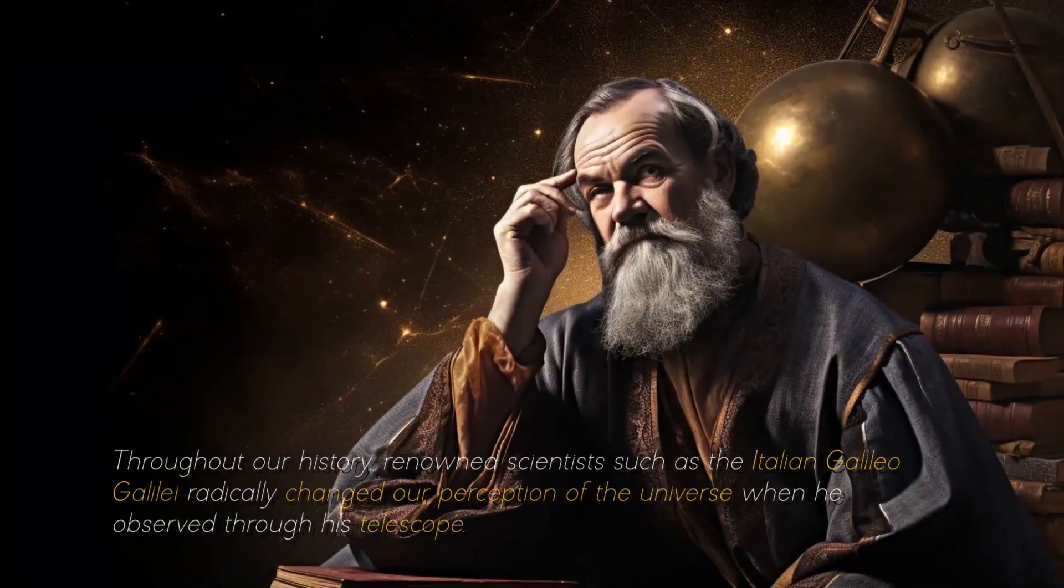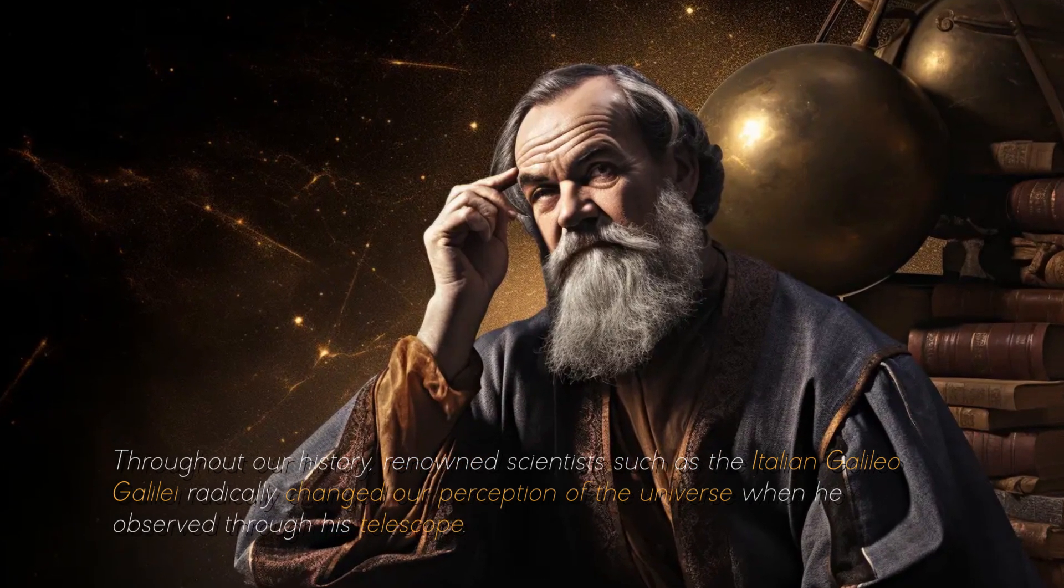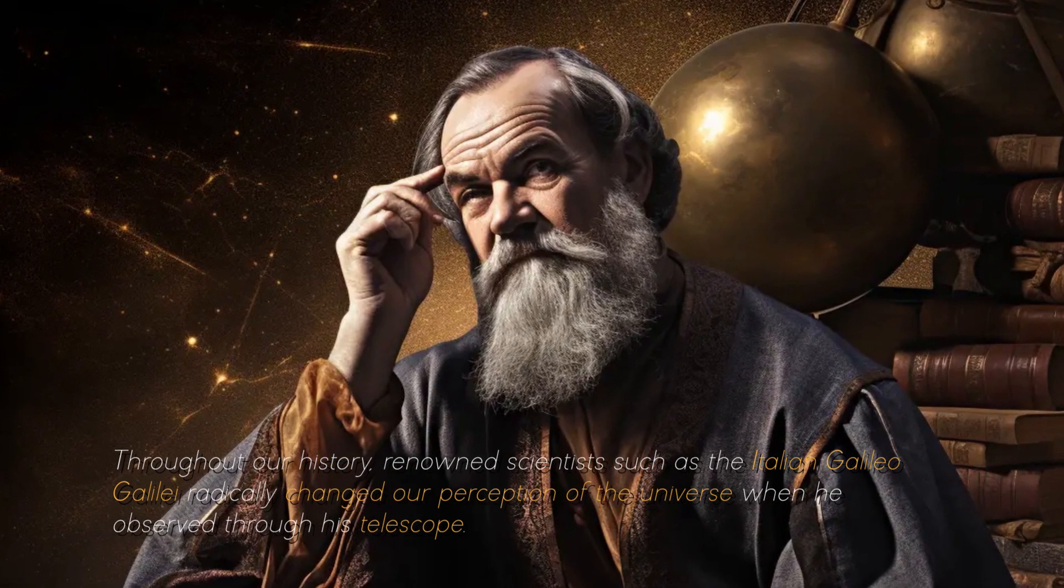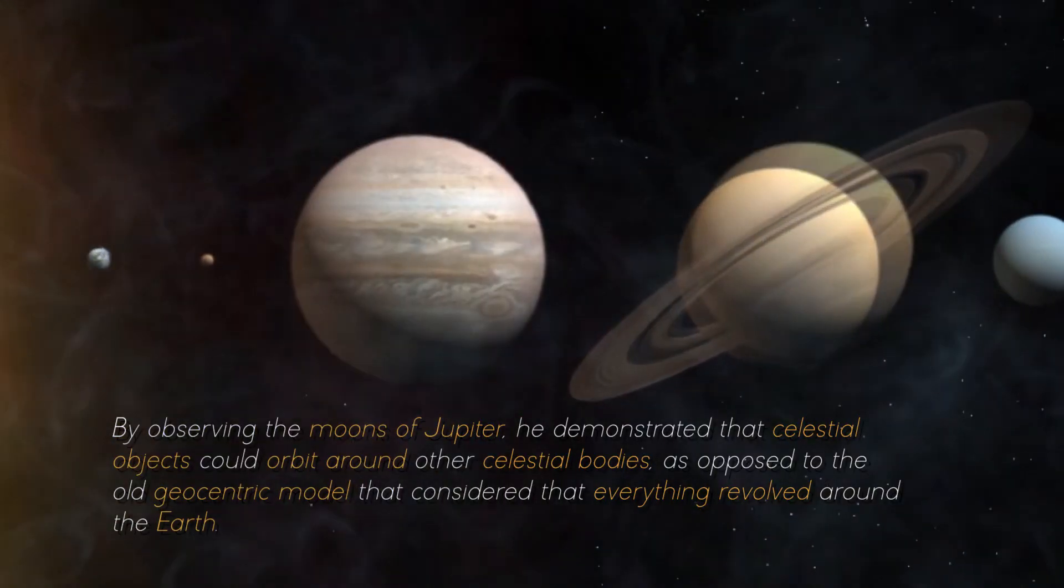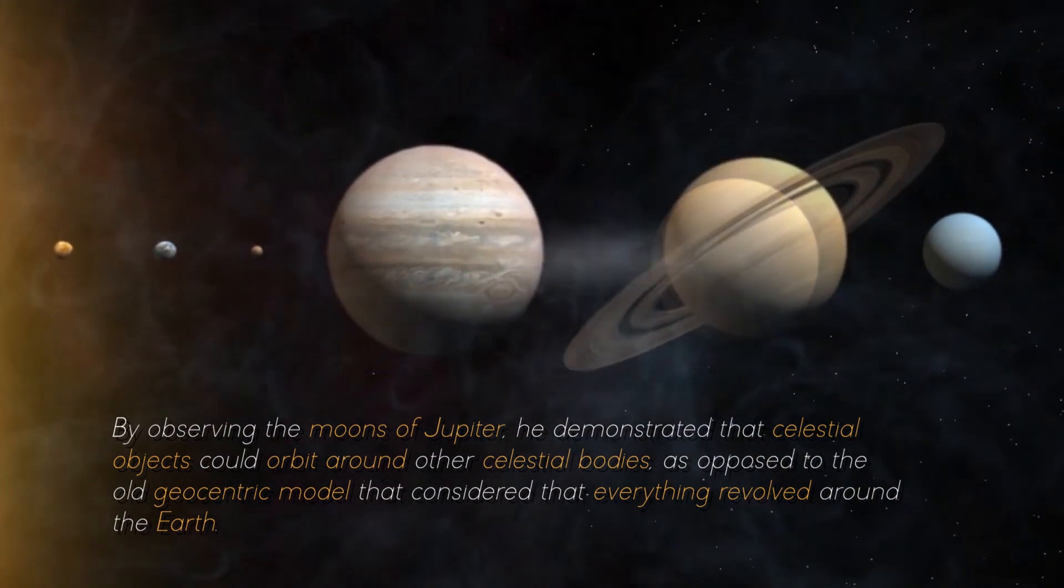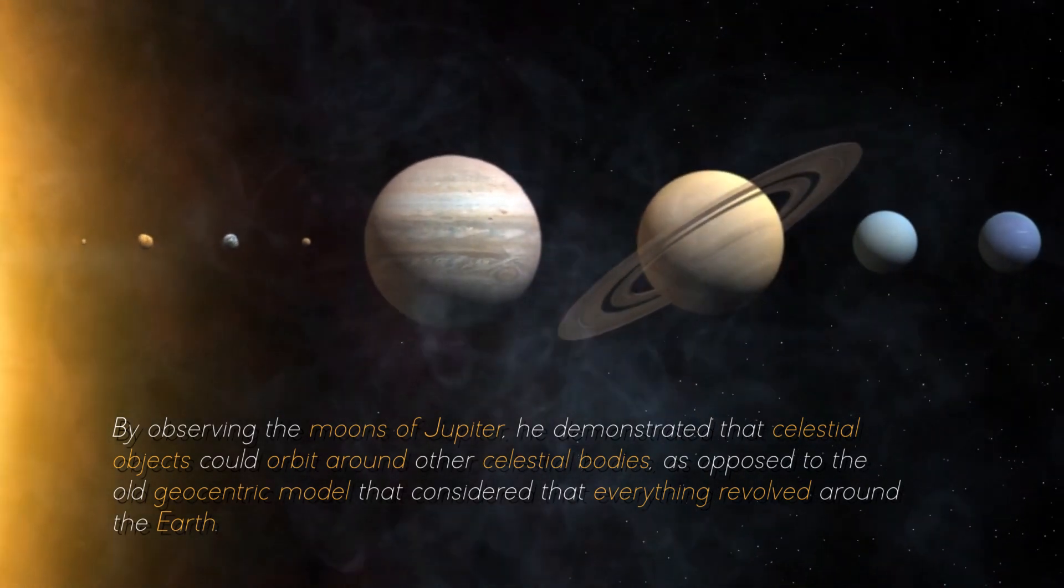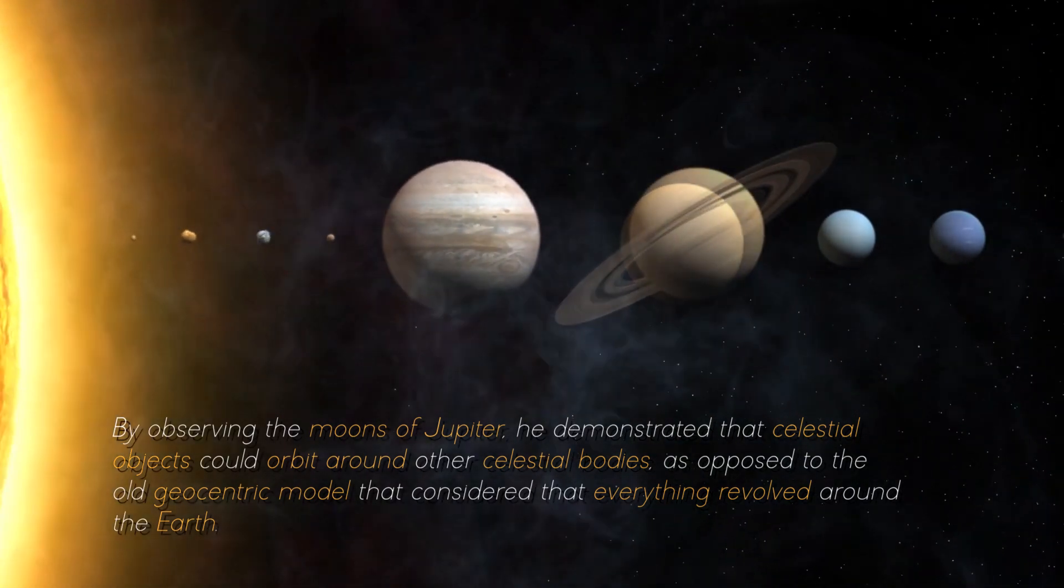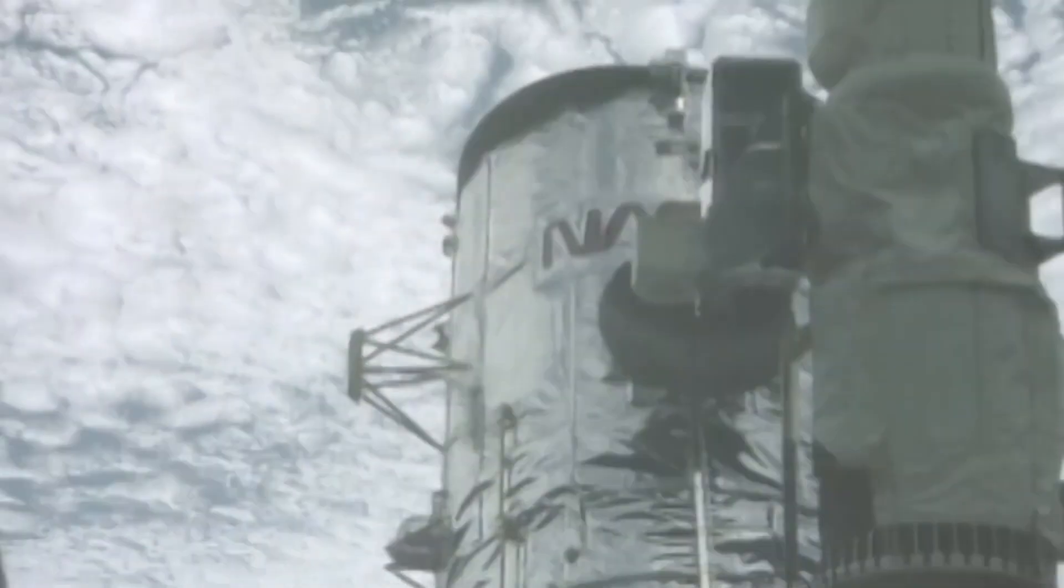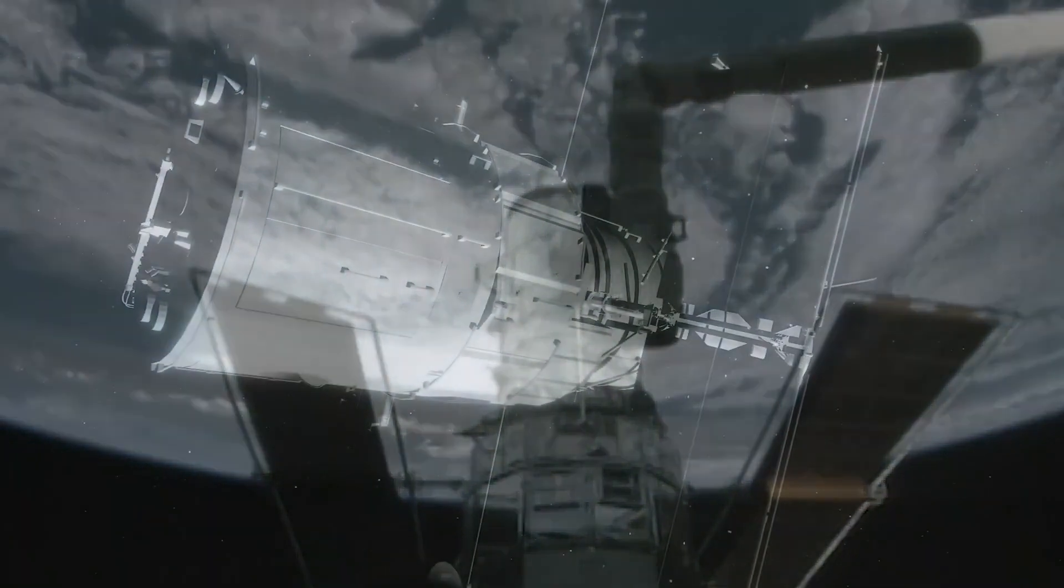Throughout our history, renowned scientists such as the Italian Galileo Galilei radically changed our perception of the universe when he observed through his telescope. By observing the moons of Jupiter, he demonstrated that celestial objects could orbit around other celestial bodies, as opposed to the old geocentric model that considered everything revolved around the Earth, thus finding revolutionized science and ushered in a new era in astronomy.